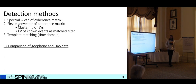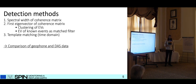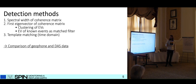I tried different detection methods. I used the spectral width of the coherence matrix, but also the eigenvectors of the coherence matrix to do some clustering and also some template matching in the time domain. I tried to compare geophone and DAS data and also to characterize how many DAS channels we actually need.